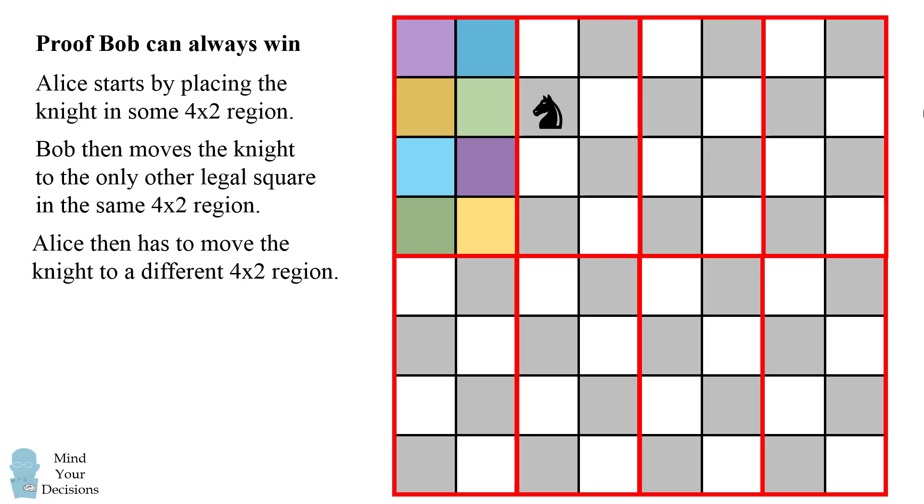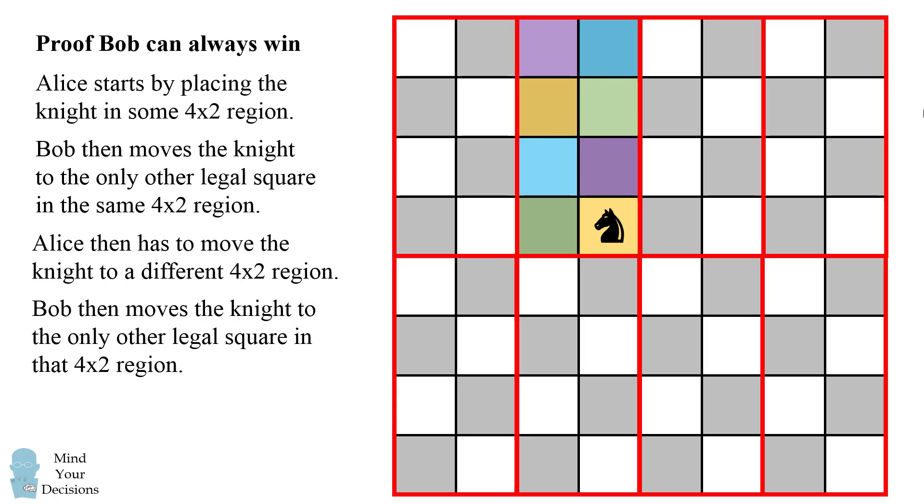Now where should Bob move? Well, he's then going to move the knight to the only other legal square in that 4x2 region. He applies the same coloring pattern to that region. In this case the knight is on a yellow square, so Bob is going to move to the other yellow square.